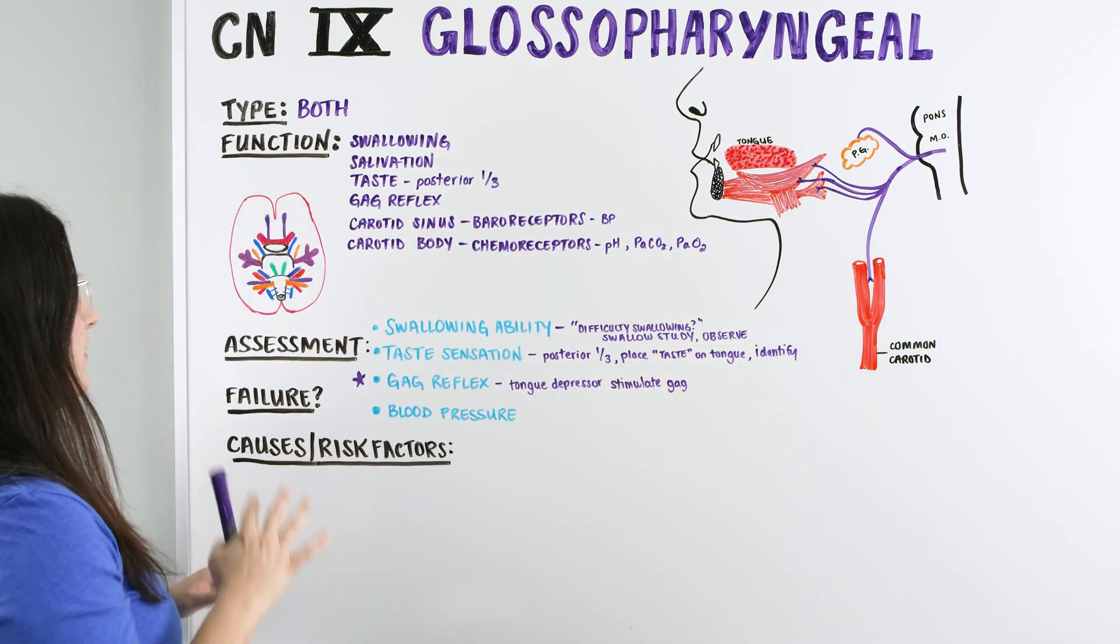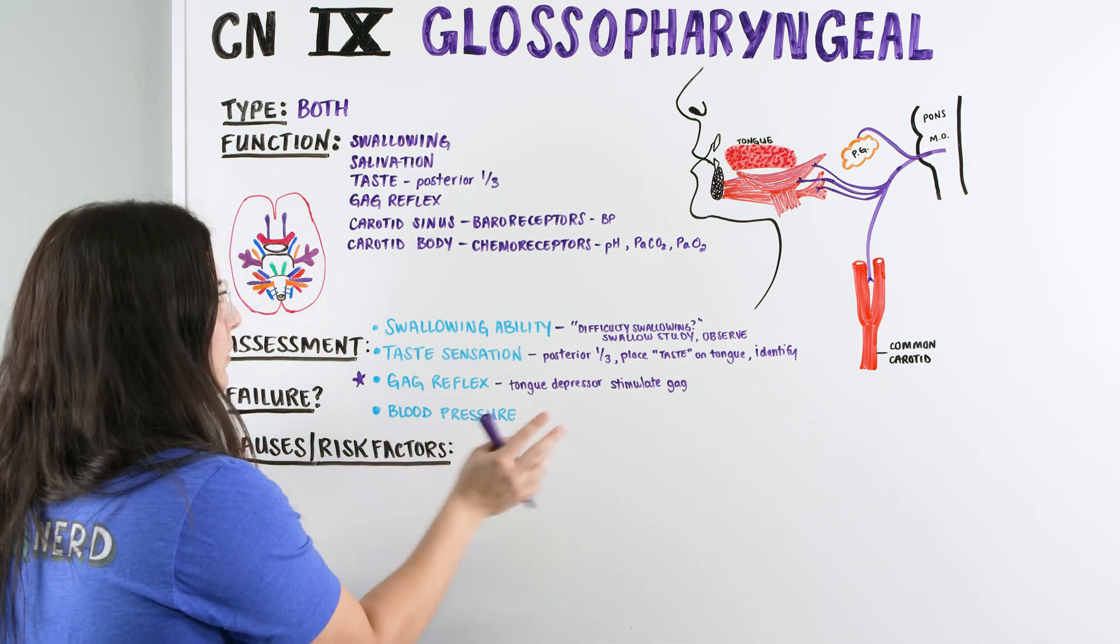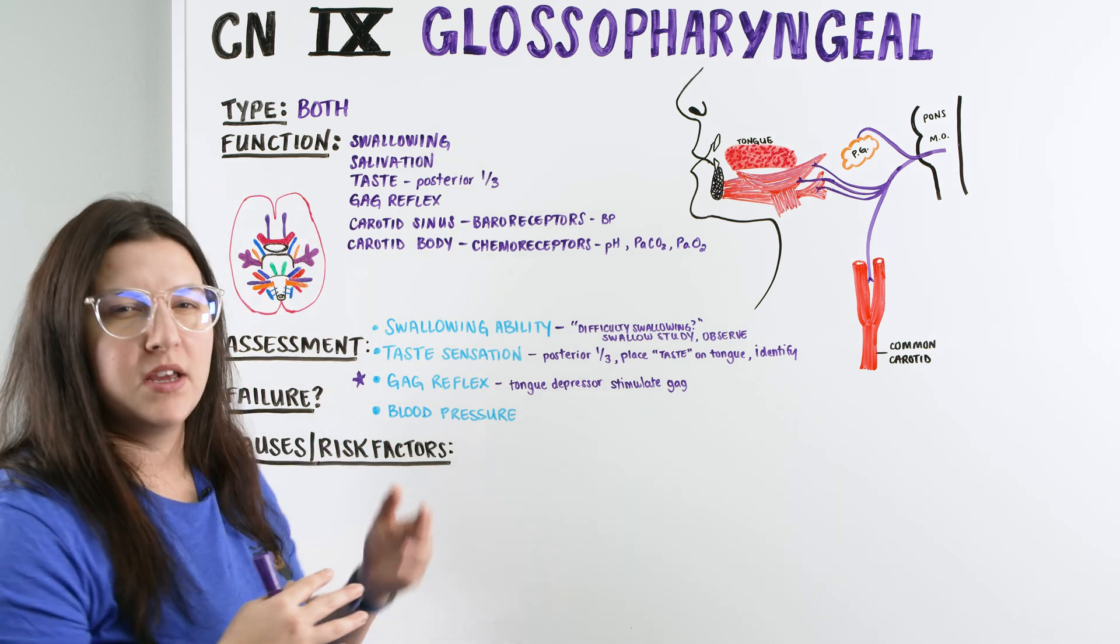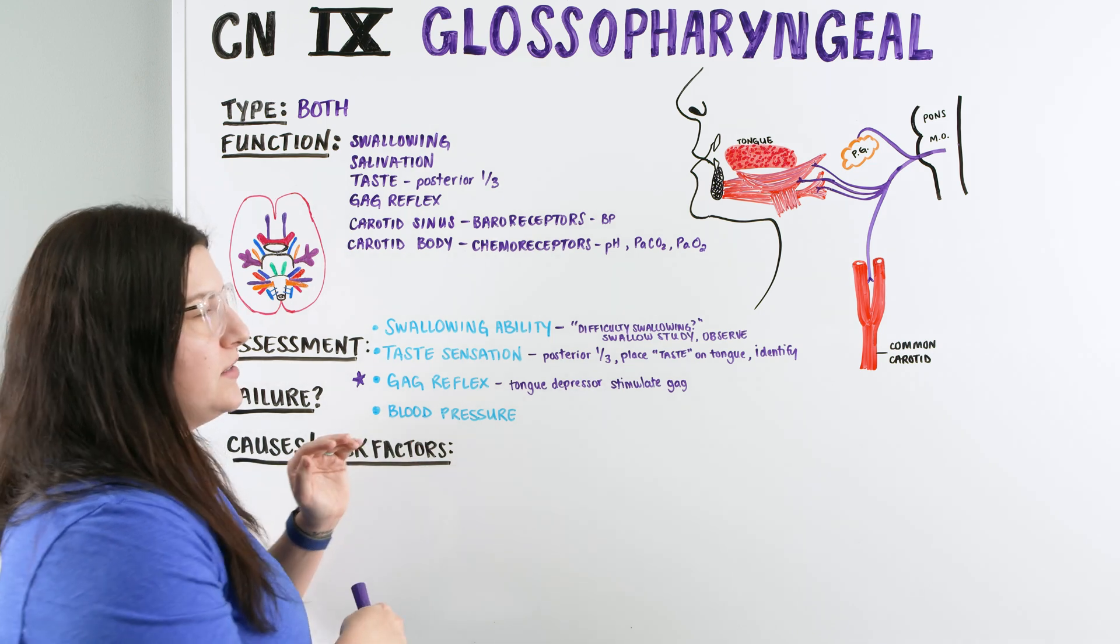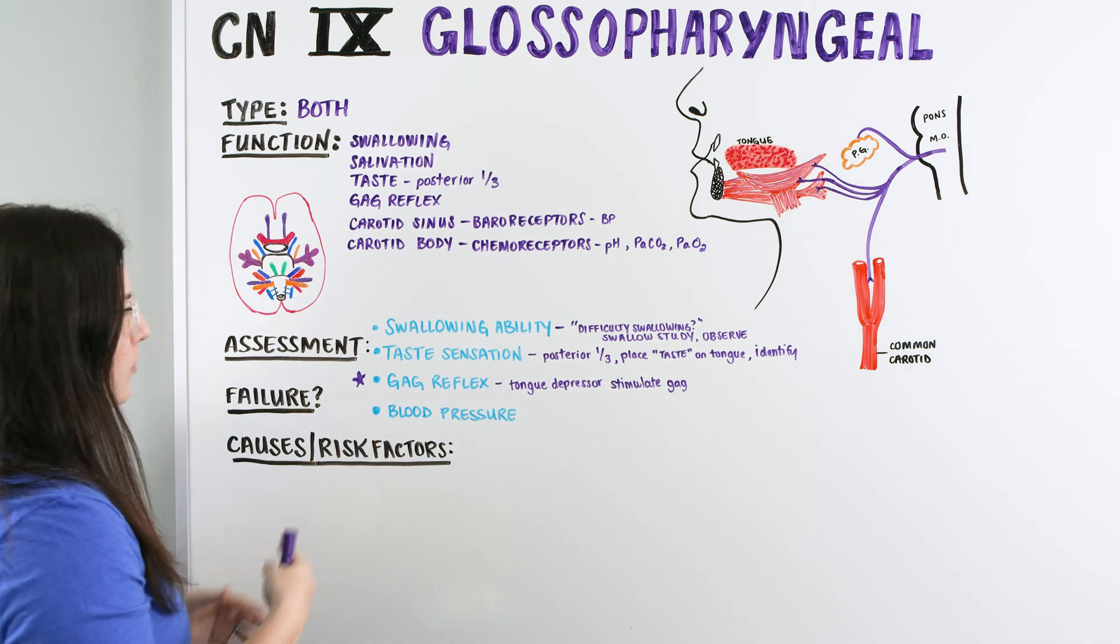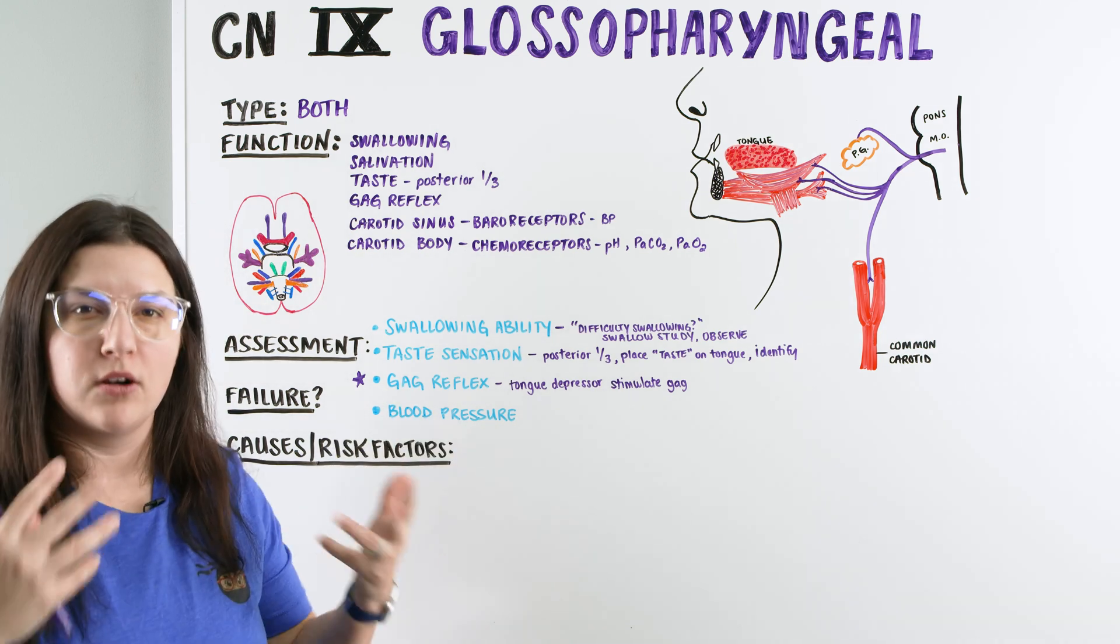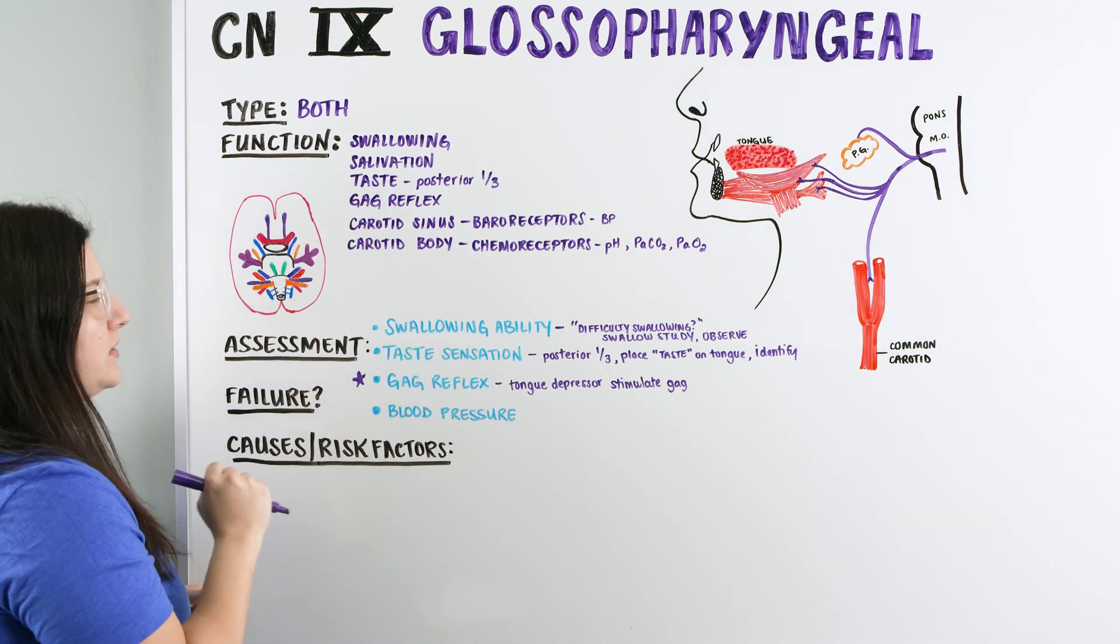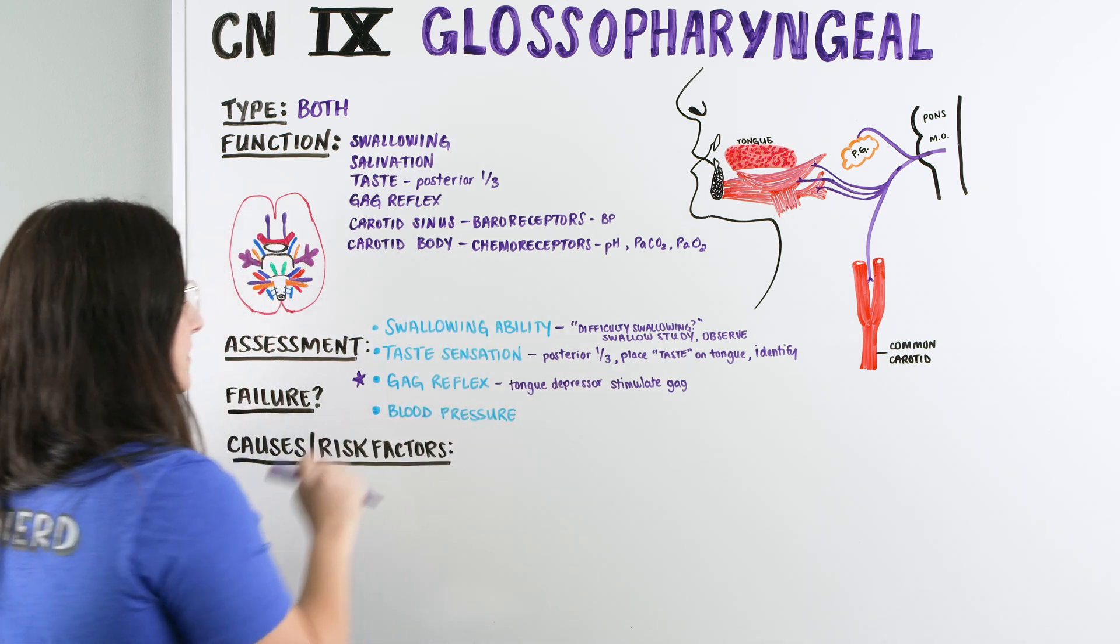And then the last one we have here is not typically one that we use for the glossopharyngeal, but I just wanted to mention that we are going to be looking at their vitals when we're assessing our patient. And it's just something to take into consideration that if their blood pressure is off, is there something going on with the glossopharyngeal nerve or is there something else? So it's just something to take into consideration when we're assessing our patients as a whole. But remember, with the glossopharyngeal, the gold standard or the one that we're going to typically use right at the bedside to get that quick assessment is the gag reflex.